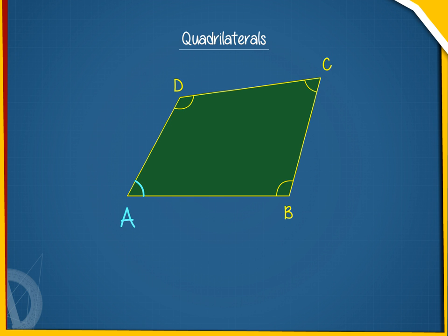Angle A and Angle B, Angle B and Angle C, Angle C and Angle D, and Angle D and Angle A are four pairs of adjacent angles.